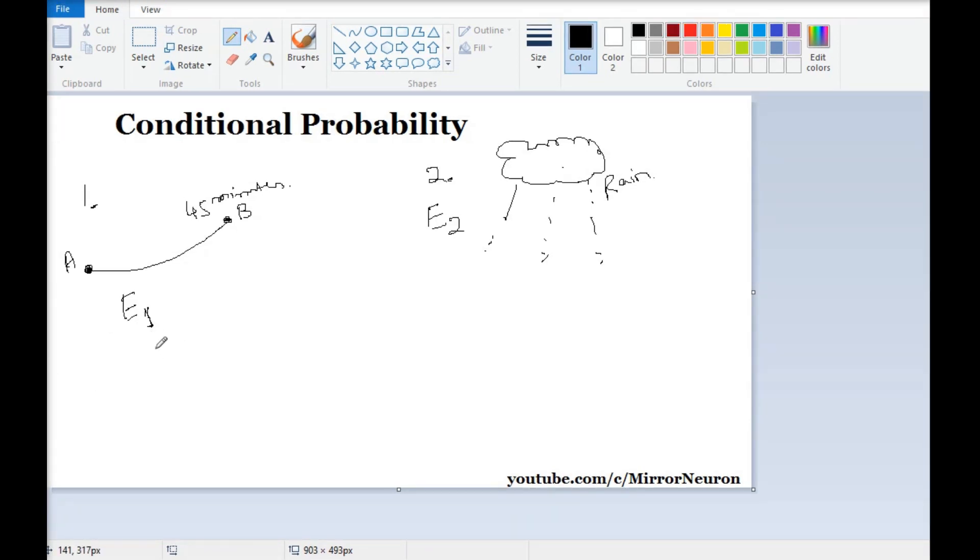If I have to represent these two events, I can draw an area like this, and I can consider this as event E1 and this as event E2.